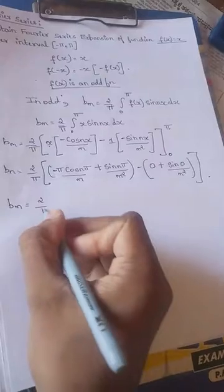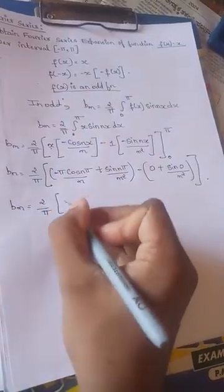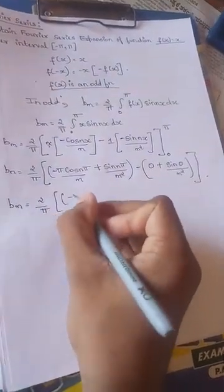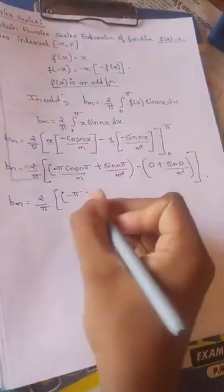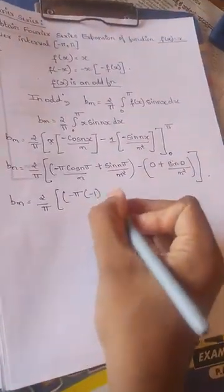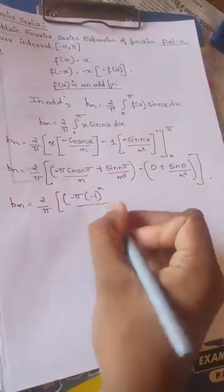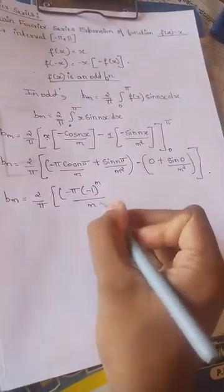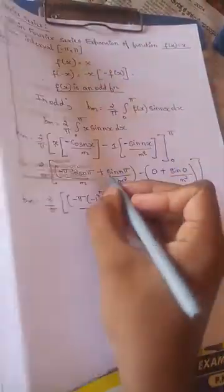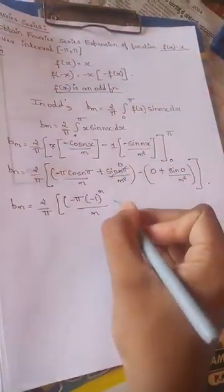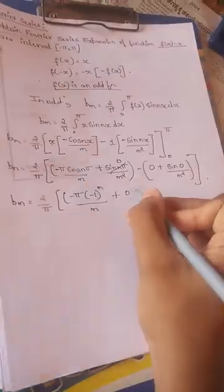We get 2 over pi times: minus pi, where cos(nπ) equals minus 1 to the power n, divided by n, plus sin(nπ) — but the value of sin(nπ) is 0, so that whole term becomes 0.